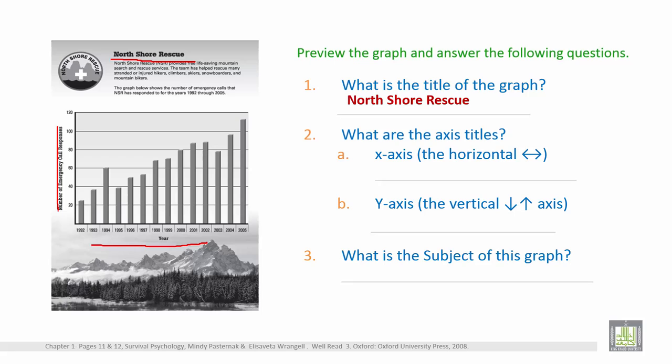So what is the answer to question 2? A: x-axis title is what is written here, year. So the answer is year. Y-axis title, what is written here? Number of emergency call responses. So the answer is number of emergency call responses.